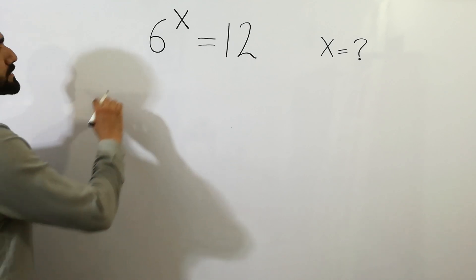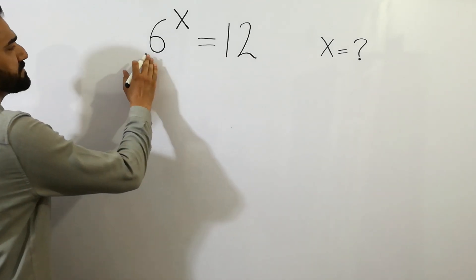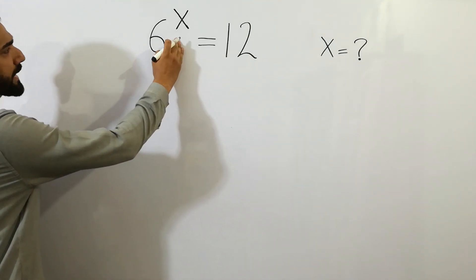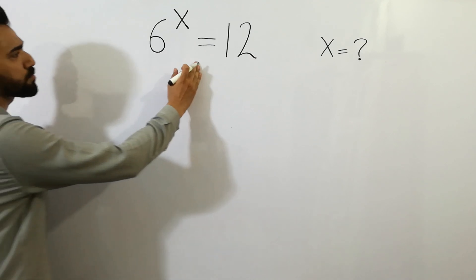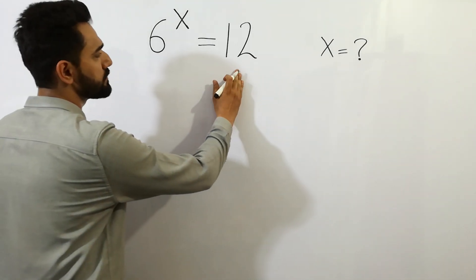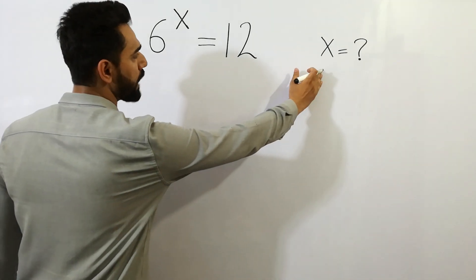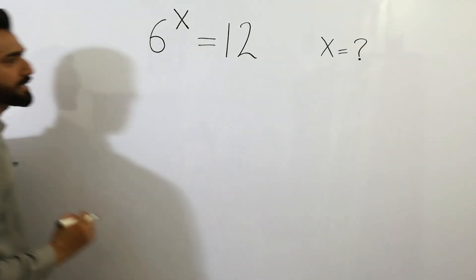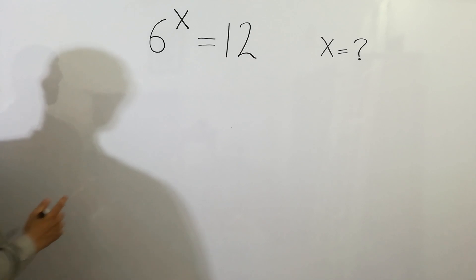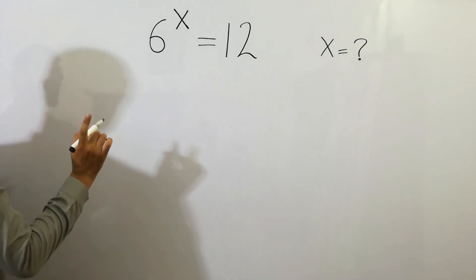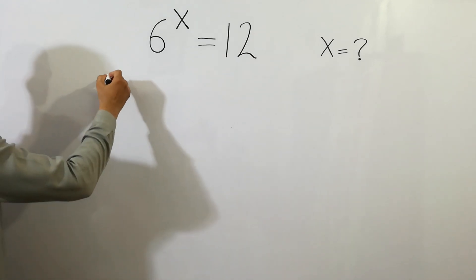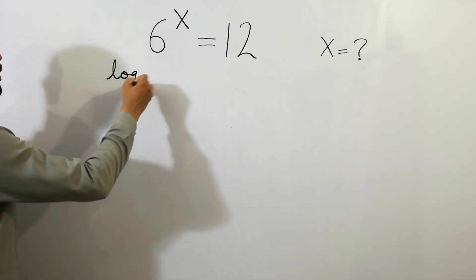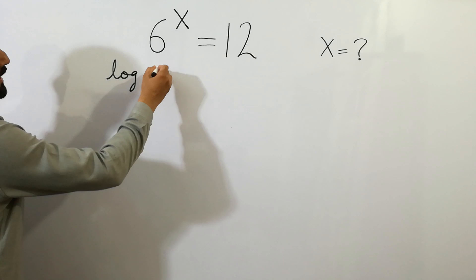Hey guys, if 6 to the power x is equal to 12, then how to solve for x? Let's solve it. In the first step, take log on both sides.